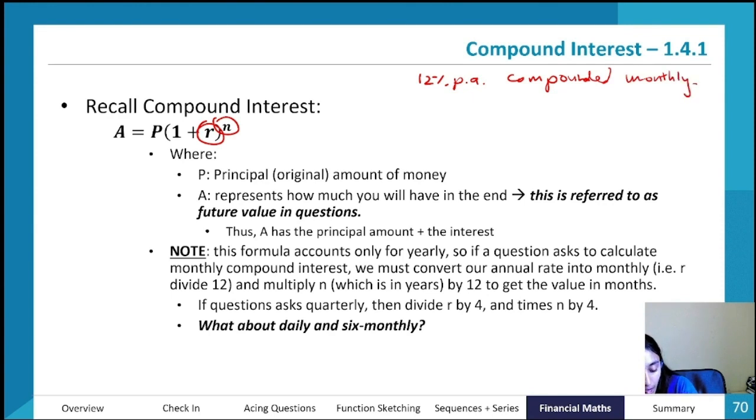Now our r and our n will be relative to our monthly part. Even though the percentage is per annum, n for a year will equal 12, and r will equal one plus 12 percent divided by 12 months because we're doing monthly, so it'll be 1.01 as opposed to 1.12. Just something to keep in mind as I move forward.